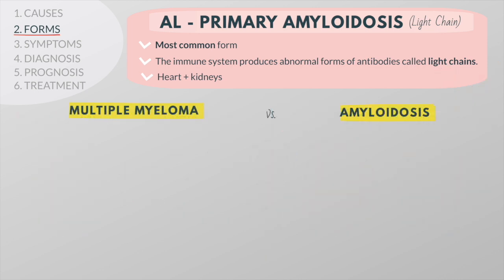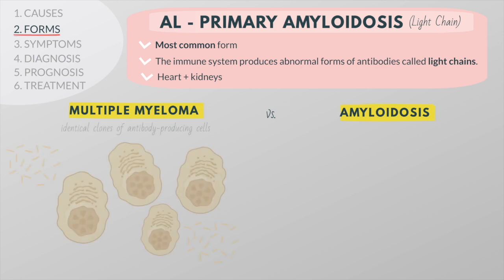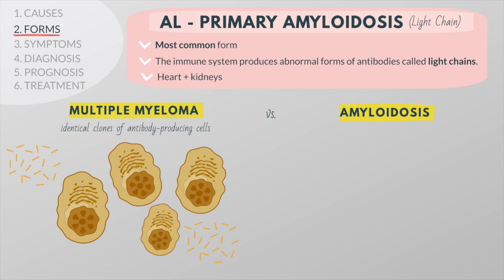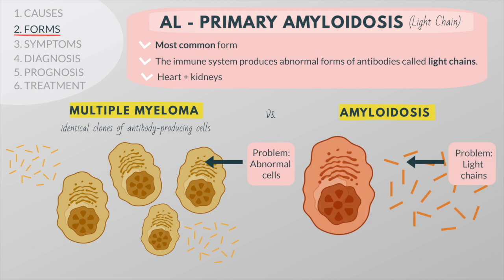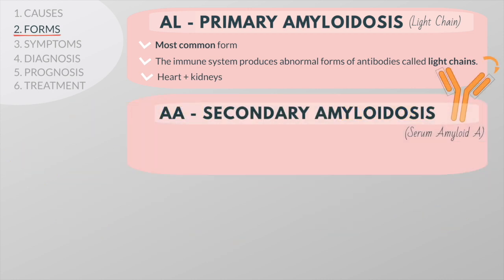Primary amyloidosis is closely related to a type of bone marrow cancer called multiple myeloma, another disease in which identical clones of antibody-producing cells grow rapidly. The main problem in multiple myeloma is the growth of abnormal cells in the bone marrow, while in primary amyloidosis it is the buildup of light chains produced by those abnormal cells. There can be overlap between the two, and patients are frequently diagnosed with both.